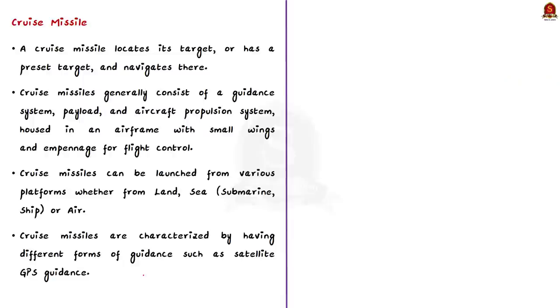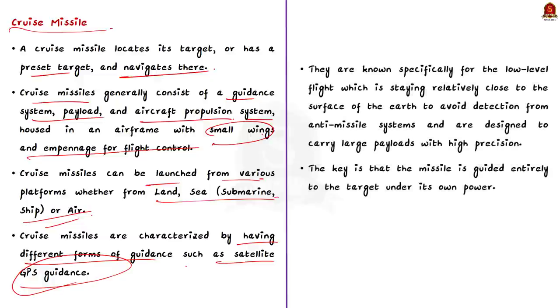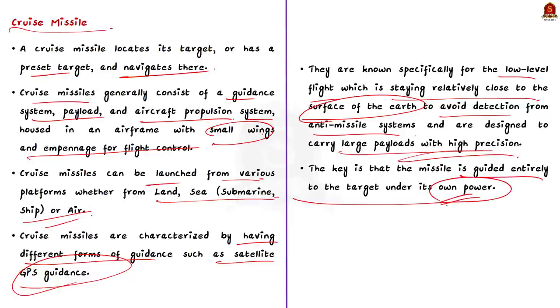Now let's see cruise missiles. See, a cruise missile locates its target and has a preset target and navigates there. These cruise missiles generally consist of a guidance system, payload and aircraft propulsion system. It is housed in an airframe with small wings and flight control. See, cruise missiles also can be launched from various platforms such as land, sea and air. Cruise missiles are characterized by having different forms of guidance such as satellite GPS guidance. And they are known specifically for the low-level flight which is staying relatively close to the surface of the earth. This is to avoid detection from anti-missile systems and are designed to carry large payloads with high precision. The key is that this cruise missile is guided entirely to the target under its own power. Brahmos and Nirbhay are famous cruise missiles used in India.